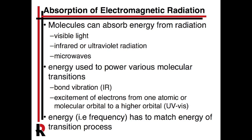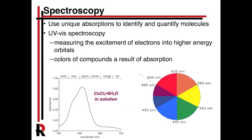The energy involved in that transition has to match the energy of the radiation, and energy is related to frequency. As a result, you have specific frequencies of electromagnetic radiation that can cause specific molecular energy processes. This leads to the whole field called spectroscopy — the idea that the energy required to do these transitions is often unique to a specific chemical entity, so unique molecules have unique absorptions in the spectrum. We can use that as an identification tool and as a tool for quantification, and this is one of the major analytical techniques used in chemistry.